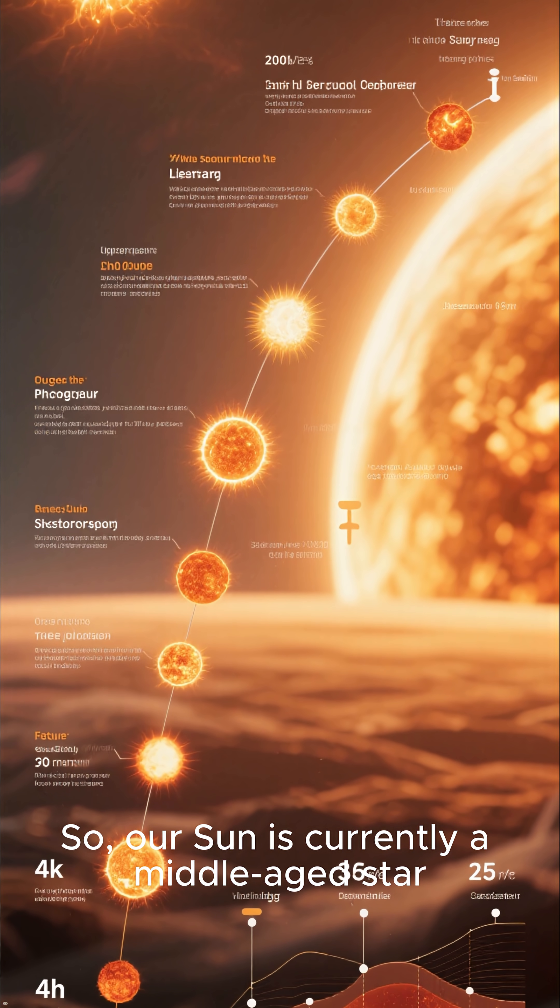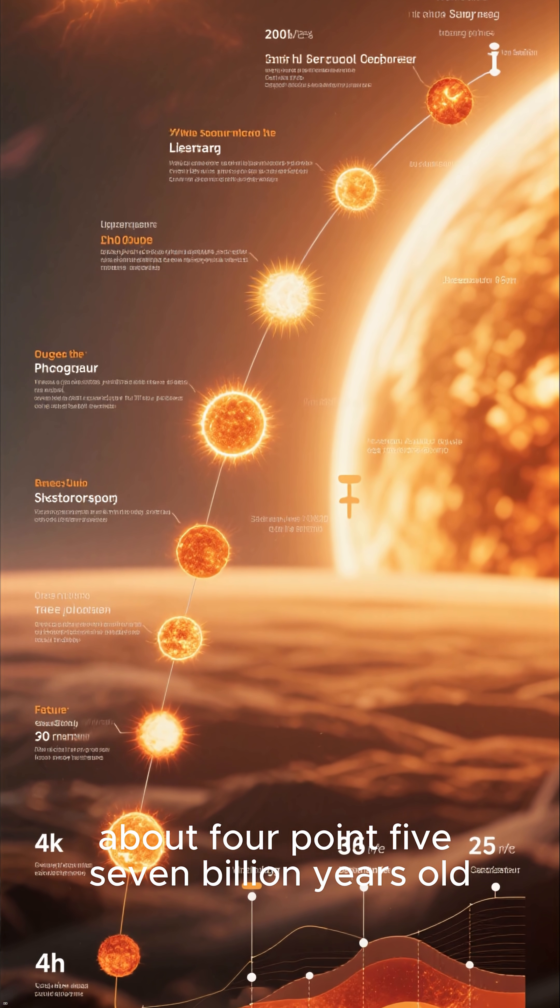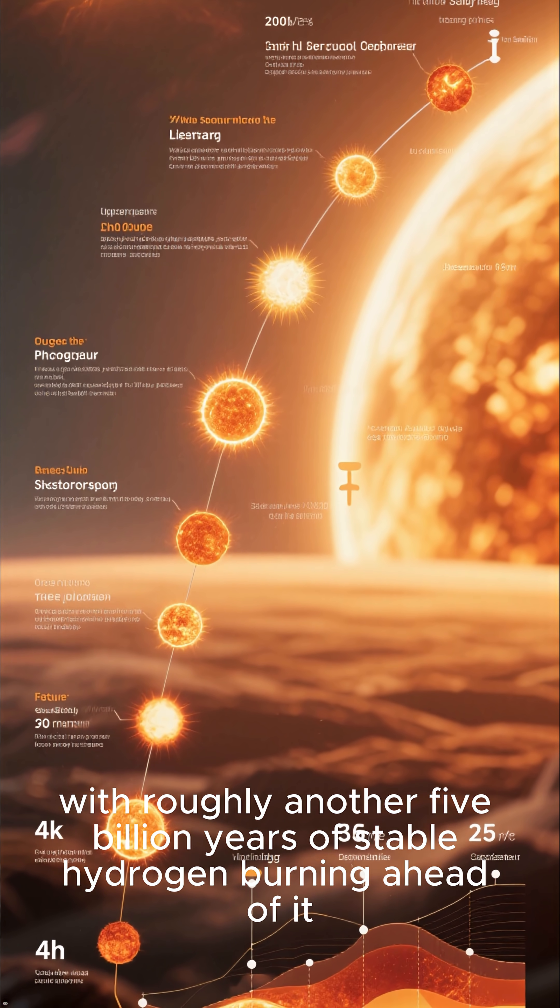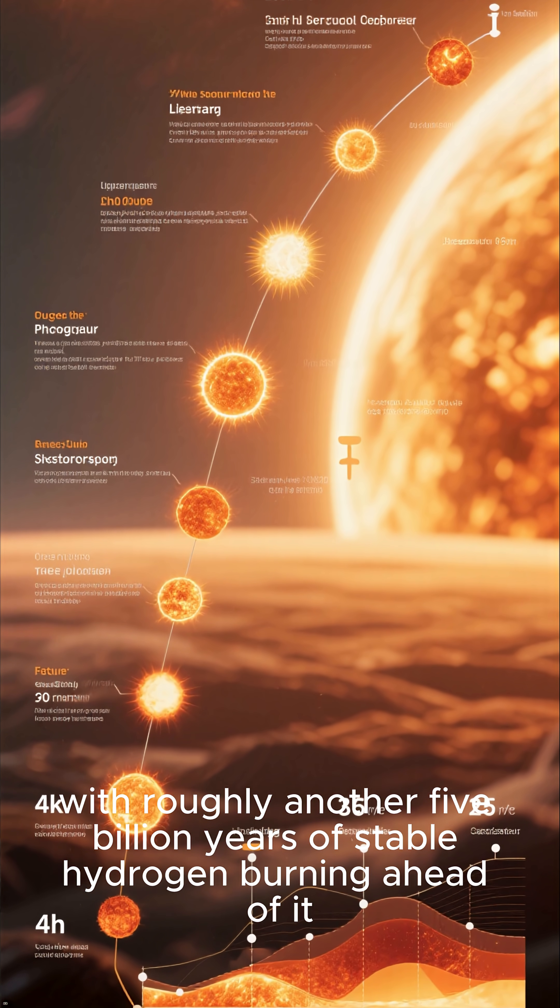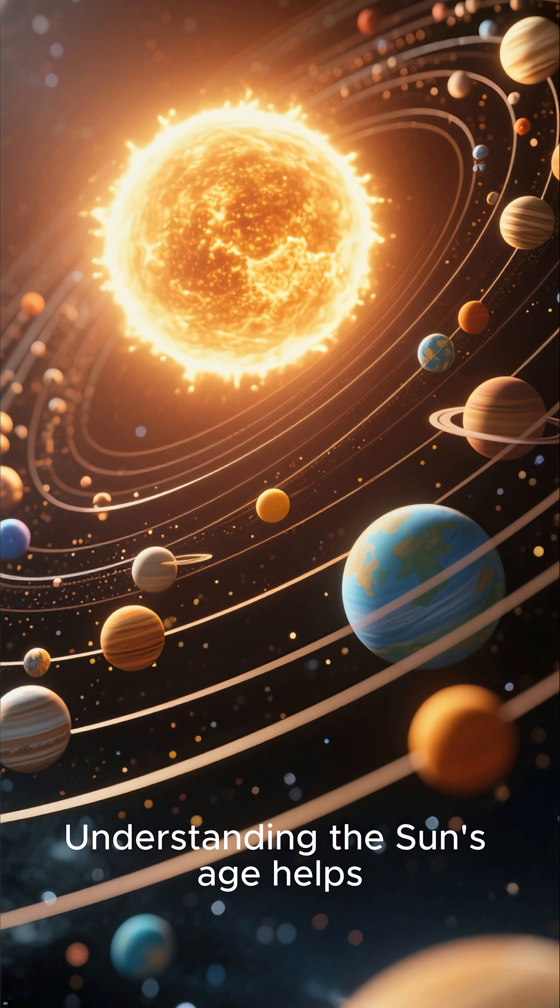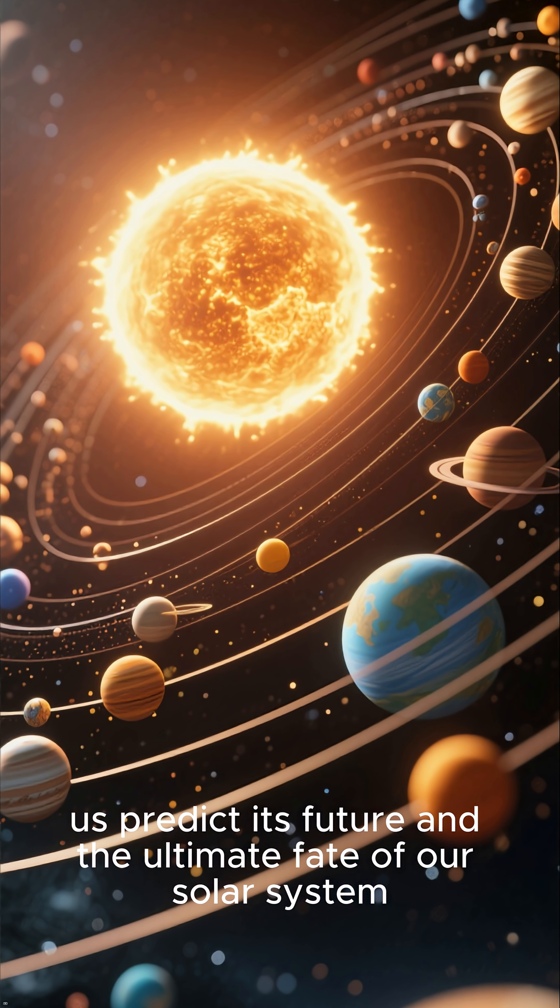So our sun is currently a middle-aged star, about 4.57 billion years old, with roughly another 5 billion years of stable hydrogen burning ahead of it. Understanding the sun's age helps us predict its future and the ultimate fate of our solar system.